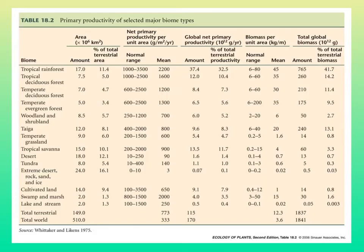Productivity ranges widely throughout the biomes. Warmer, wetter places like the tropical rainforest have high net primary productivity, and this decreases as you go toward the poles and as things get drier. Interestingly, swamps and marshes — wetlands — are extremely productive, even though their plant cover seems relatively low and not very diverse.